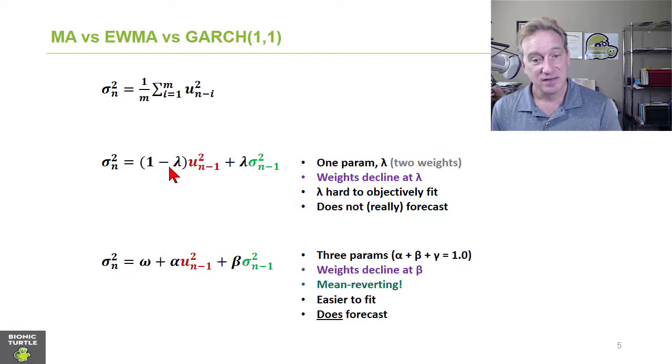And then the exponentially weighted moving average generalizes to the GARCH 1.1, which has three parameters that are really weights. Alpha plus beta plus gamma equals 100%. The beta is analogous to the lambda. And so weights of consecutive returns or squared returns, the ratio of those weights of consecutive squared returns is beta. This additional term means that the GARCH 1.1 is mean reverting.